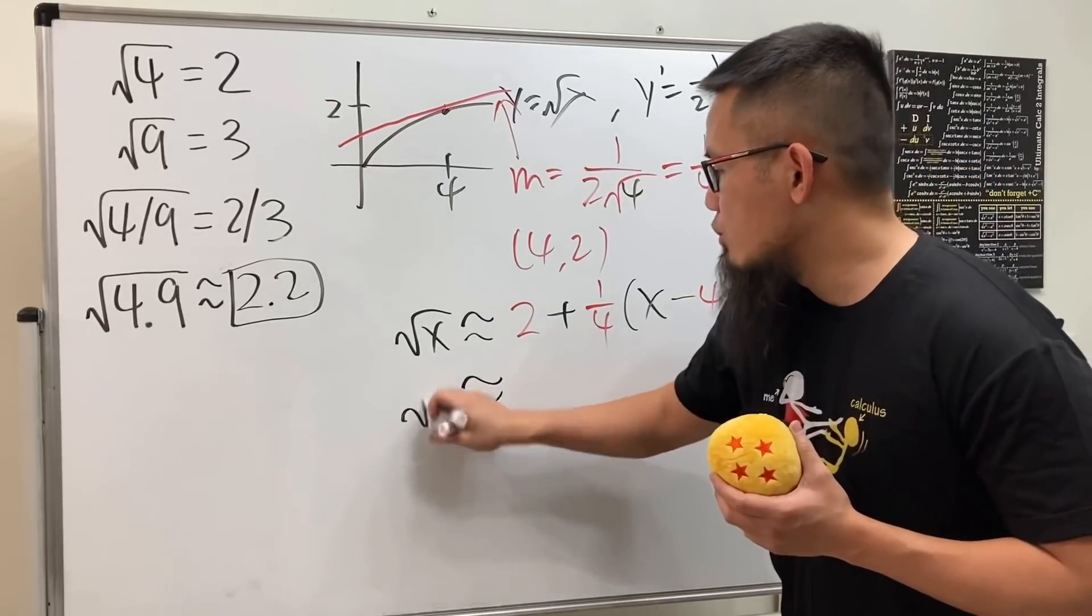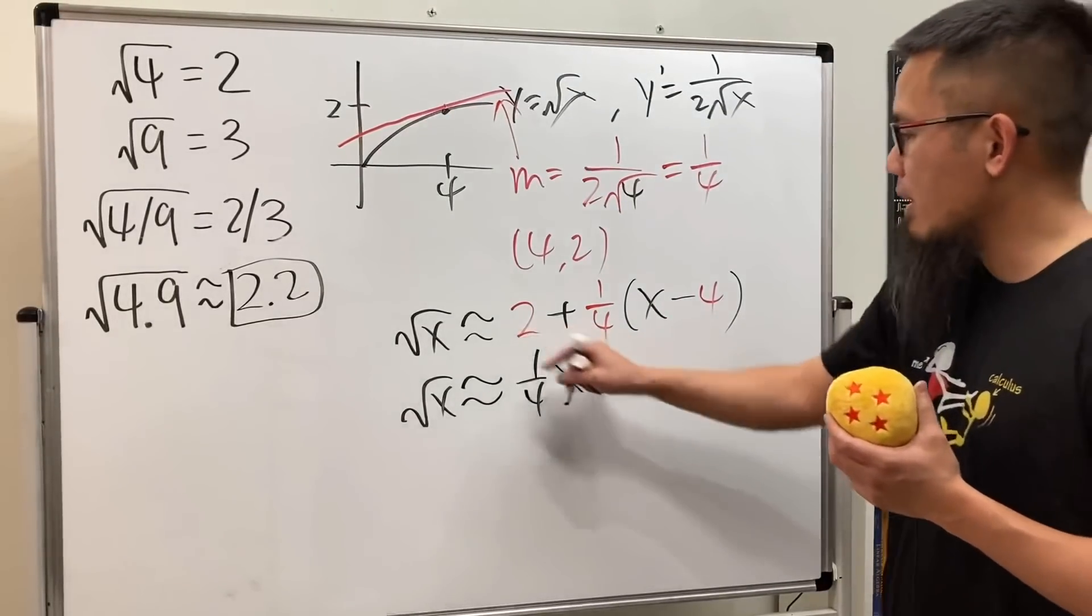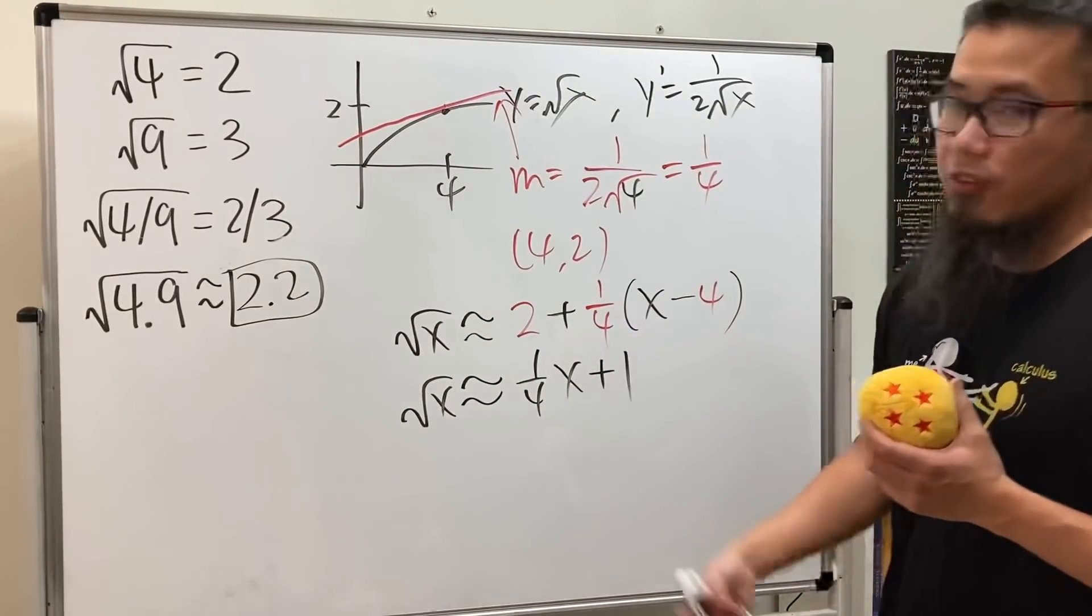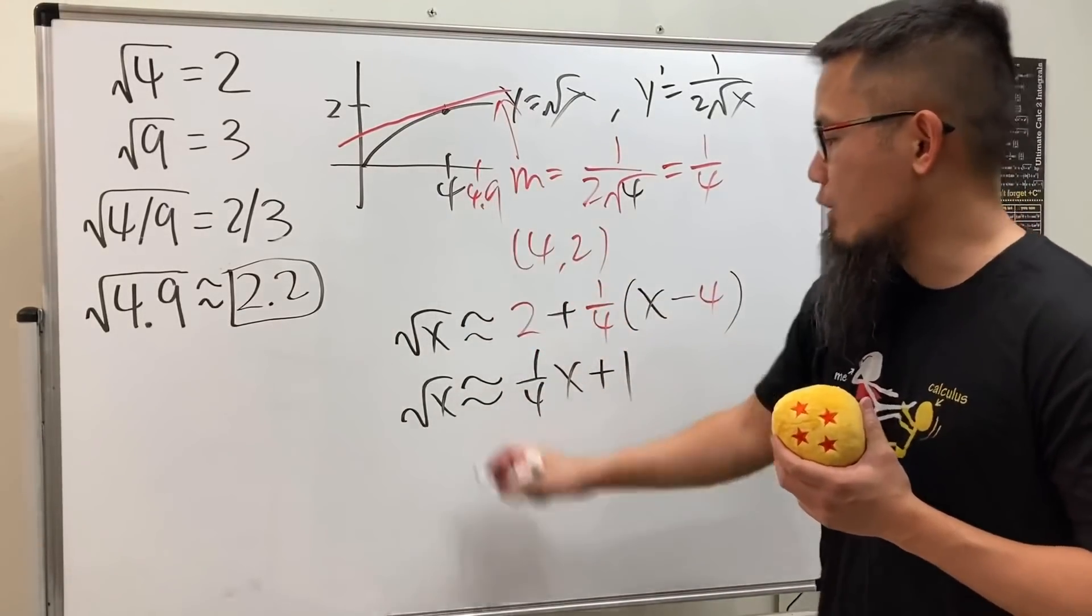You can see that √x is approximately (1/4)x, and then -1 + 2, which is +1. So now we are just going to be plugging in 4.9. So √4.9...